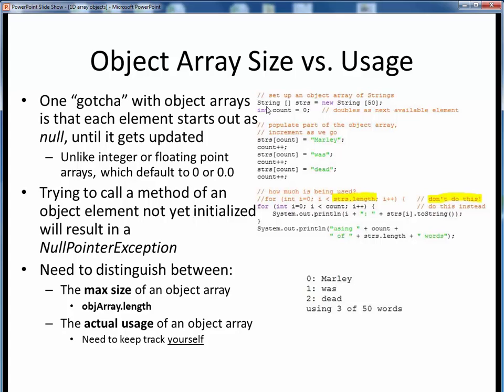Here on the right is a code example showing what we mean. String is a class in Java, so we can declare and instantiate an array of strings of size 50, as we see up here. Then we'll also declare this count variable and initialize it to 0, which will serve as both the number of string objects in our array, as well as the next available array element index.